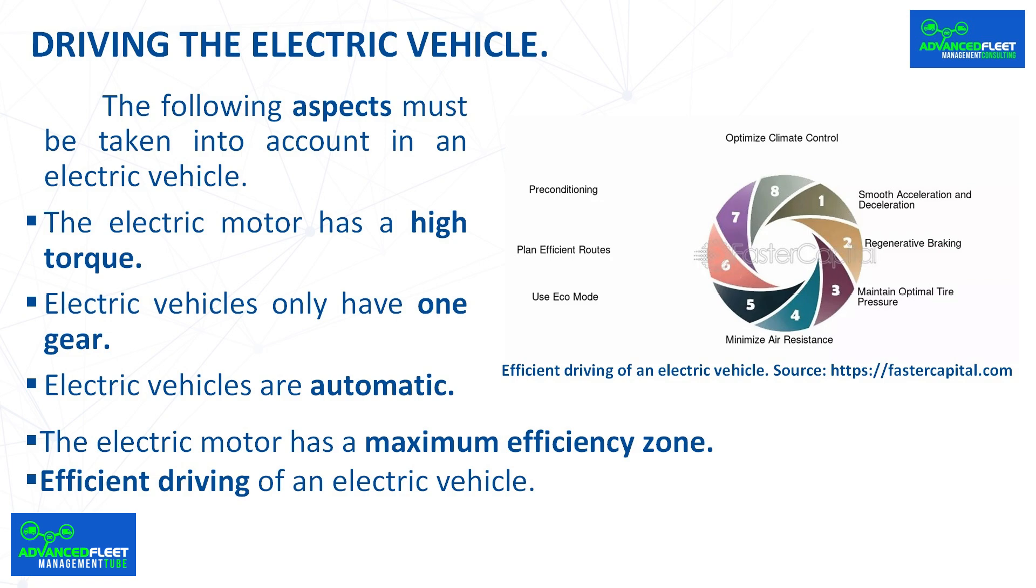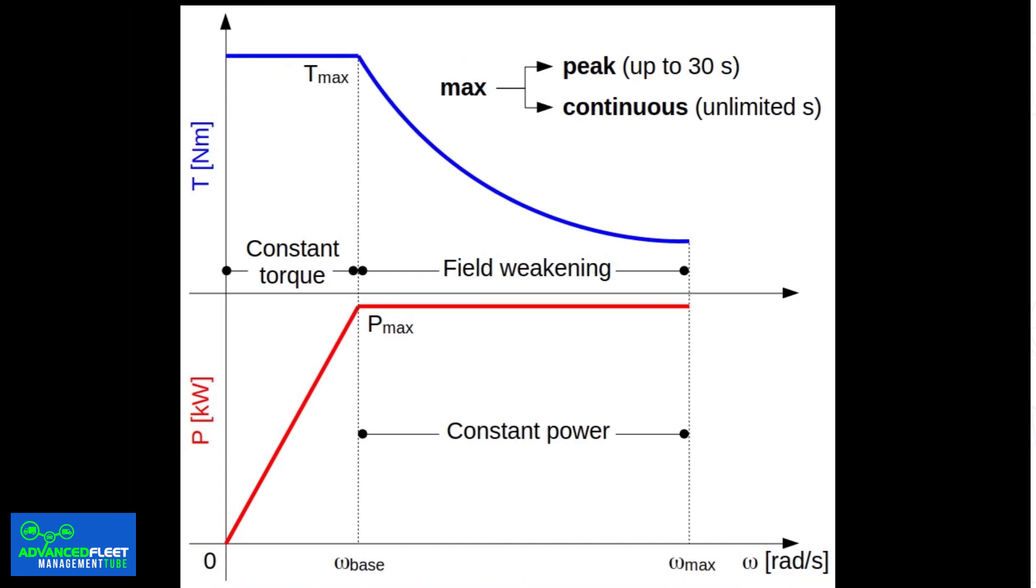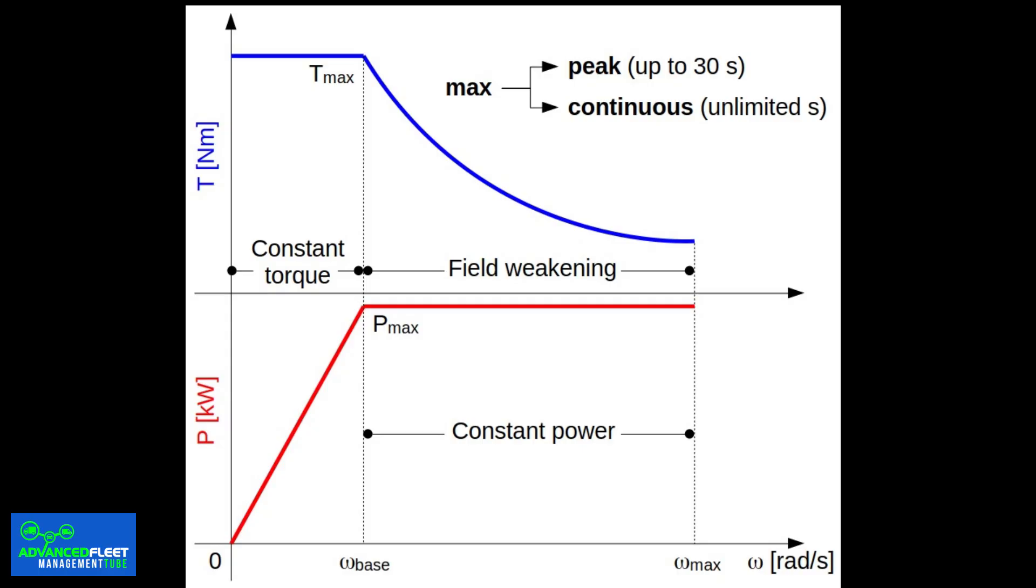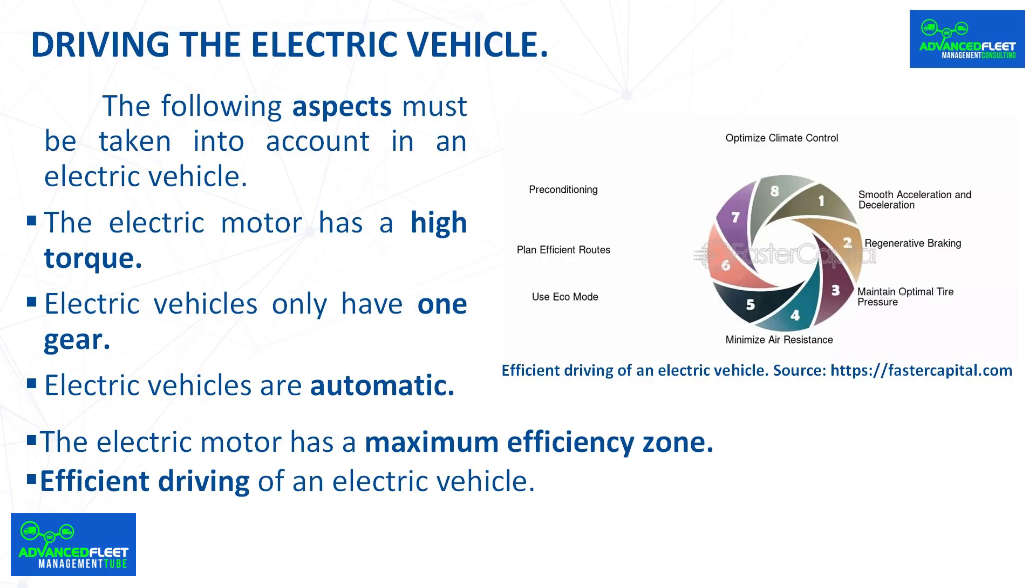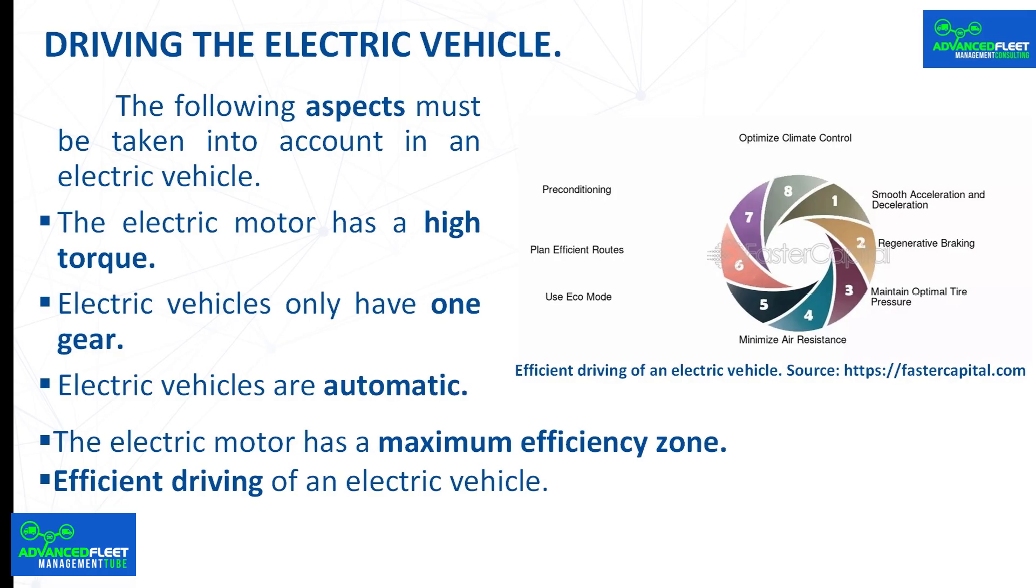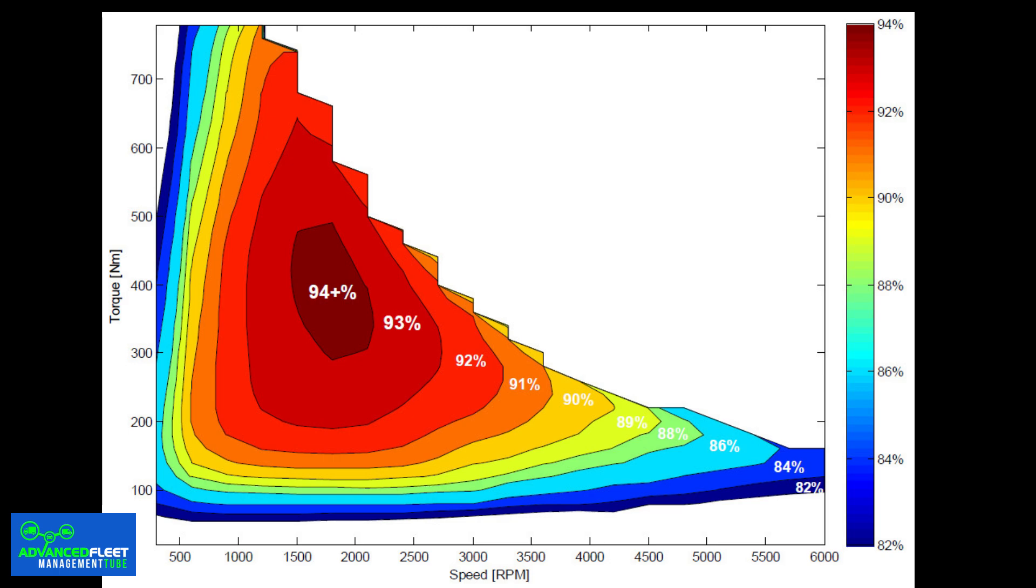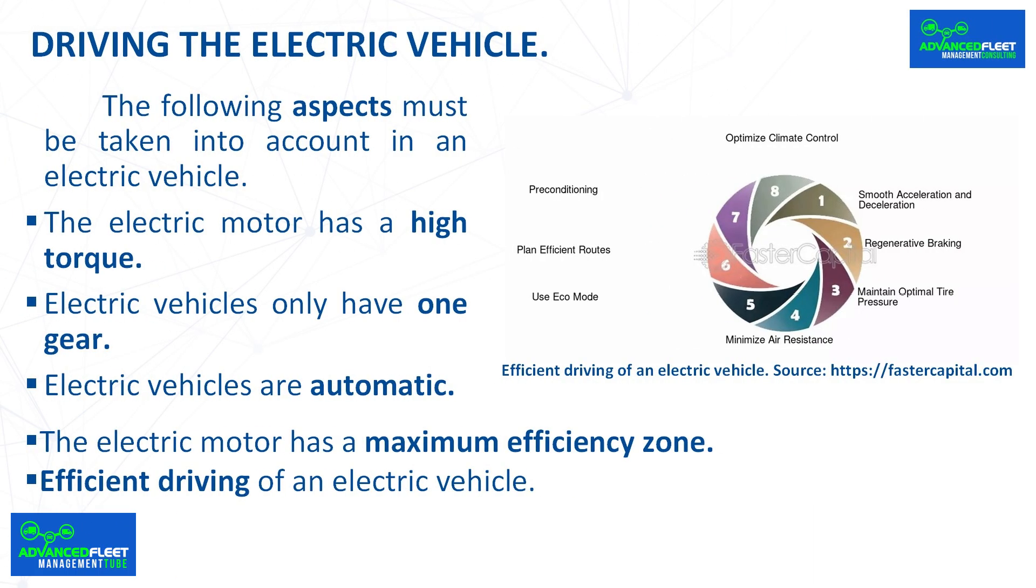Higher vehicle acceleration is achieved driving the electric vehicle. The following aspects must be taken into account in an electric vehicle. The electric motor has a high torque from low and over a wide range of revolutions. Electric vehicles only have one gear and some premium vehicles are experimenting with two gears. Electric vehicles are automatic, so the driver only accelerates and brakes, including in electric vehicles with two gears. And in many cases the driver does not even brake, because when he lifts his foot off the accelerator, the vehicle applies regenerative braking. The electric motor has a maximum efficiency zone, with partial loads or half loads and half revolutions.